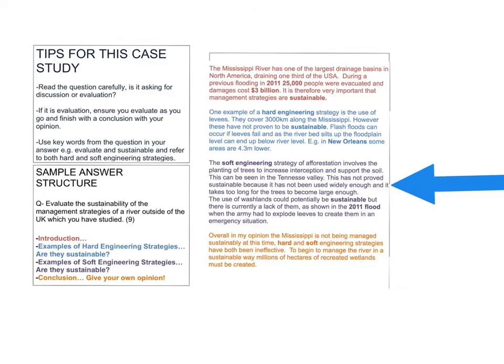For hard engineering strategies, state your strategy and include a couple of facts and figures. For example, with levees you can mention there are 3,000 kilometres of levees along the Mississippi. Then refer back to the sustainability aspect — they have not proven to be sustainable, flash floods can occur. For soft engineering, use afforestation with the Tennessee Valley example, explain what the strategy aims to do, but note it has not proved sustainable as it hasn't been used widely enough and trees take too long to grow. Washlands could potentially be sustainable, but there is a lack of them as shown in the 2011 flood.